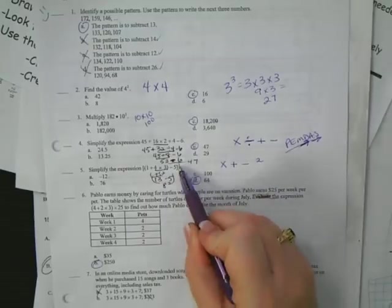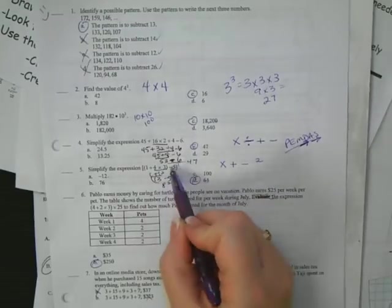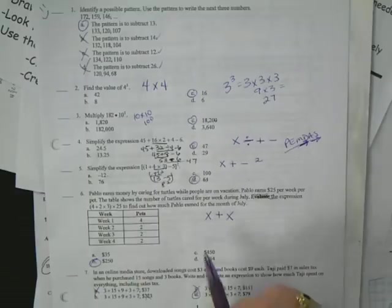Alright, number six, I'm going to multiply here, then I'm going to add. That's in parentheses, and then I'm going to multiply to get 250.